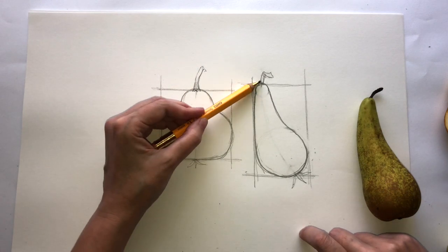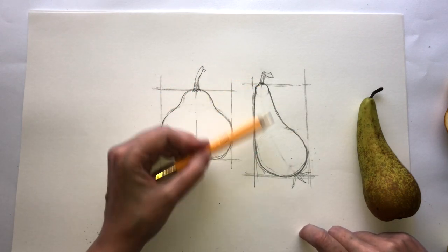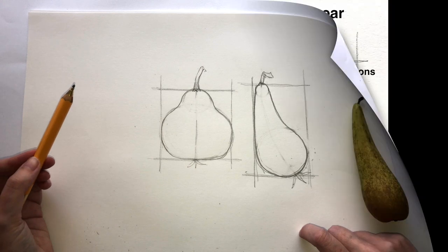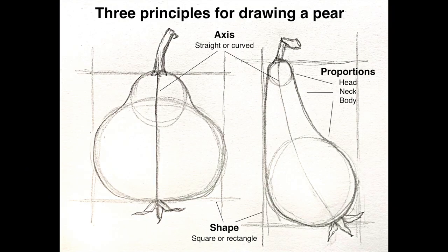So you have your three principles: axis, overall shape, and proportions. But with these three very simple principles, you end up with two completely different pear varieties, and you can get it right every time.